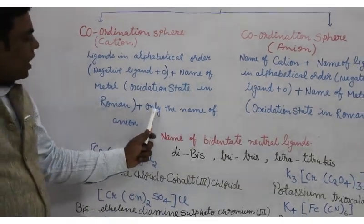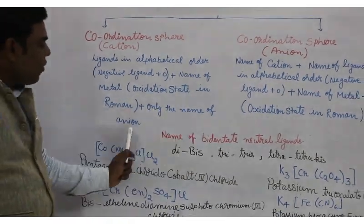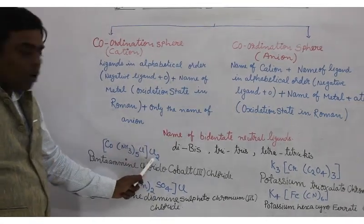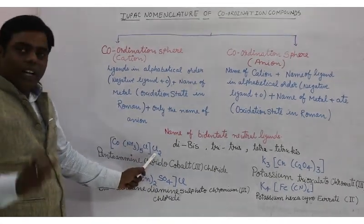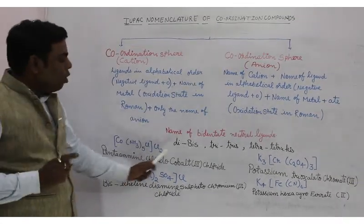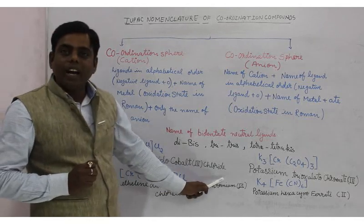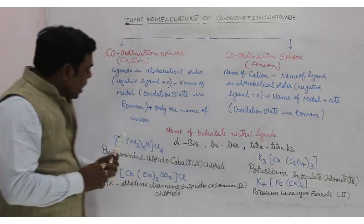The name of the outer anion — here there are 2 chlorides, but for the outer anion you do not use the prefix 'di'; you simply write chloride.